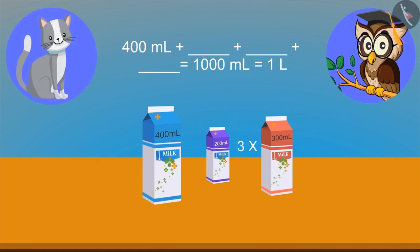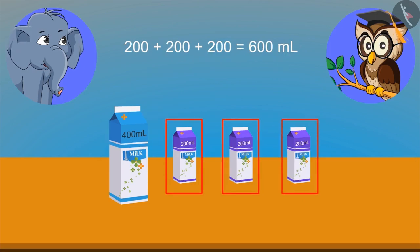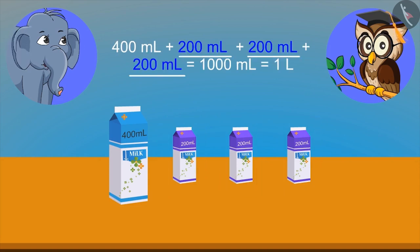Is the answer 300 ml? On combining, I think it will make 1000 ml. I think, the correct answer is 200 ml. Mixing three packets of 200 ml makes 600 ml. And mixing these 600 ml with 400 ml will make 1 liter. Yes, right.